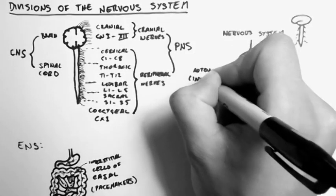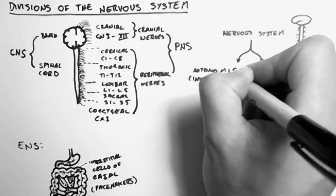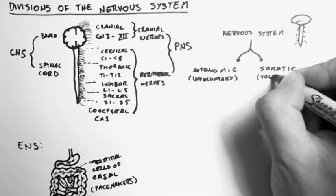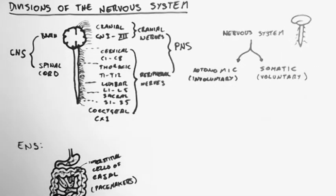Now the autonomic are the involuntary nerves. They're the ones that we can't control consciously. The somatic, however, are voluntary. So we can control those consciously.